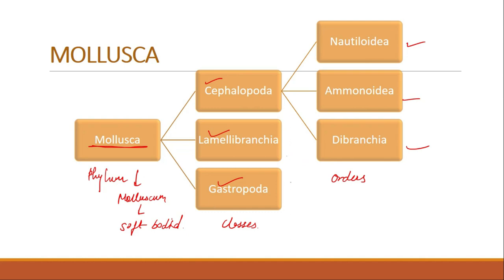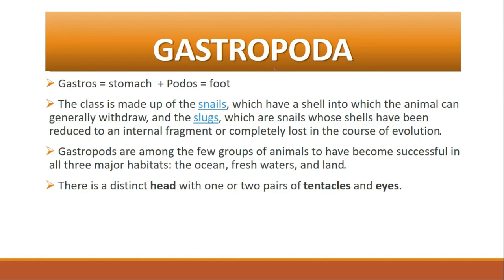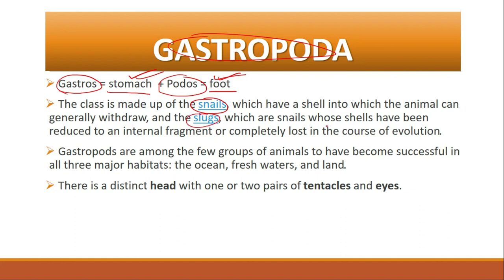Let's start with gastropods. The word gastropoda is made up of two words: 'gastros' meaning stomach and 'poros' meaning foot — so gastropoda means stomach plus foot. This class is made up of snails, which have a shell into which the animal can generally withdraw, and slugs, which are snails whose shells have been reduced to an internal fragment or completely lost in the course of evolution. Gastropods are among the few groups of animals to have become successful in all three major habitats: ocean, fresh waters, and land. They have a distinct head, one or two pairs of tentacles, and eyes.